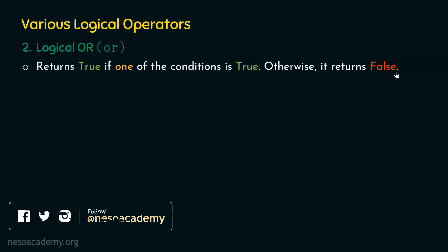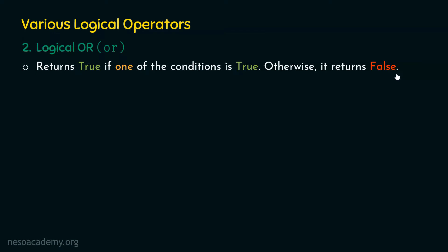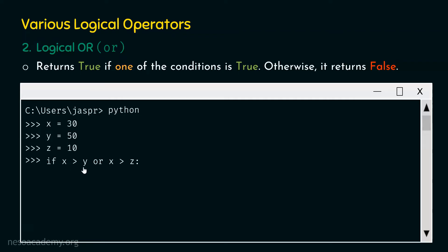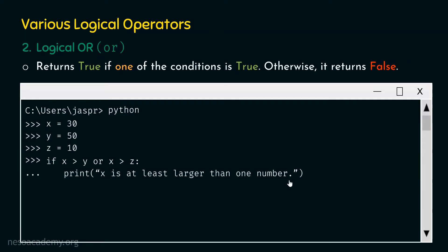Logical OR will return false only when both the conditions are false. Let's open the command prompt and type: X equal to 30, Y equal to 50, Z equal to 10. Then type: if X greater than Y or X greater than Z, followed by a colon. Hit enter, and with the three dots indicating continuation, type: print 'X is at least larger than one number'.